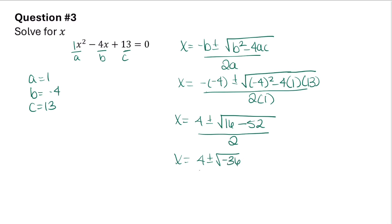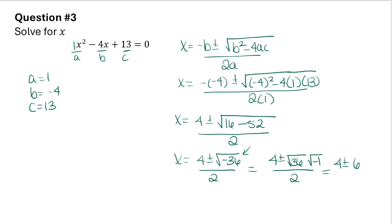Since I have a negative radicand I can turn that into an imaginary number. This becomes 4 plus or minus the square root of 36 times the square root of negative 1, all over 2. The square root of 36 is 6 and the square root of negative 1 is i. I can simplify because 4 and 6i are both divisible by 2, so x equals 2 plus or minus 3i.